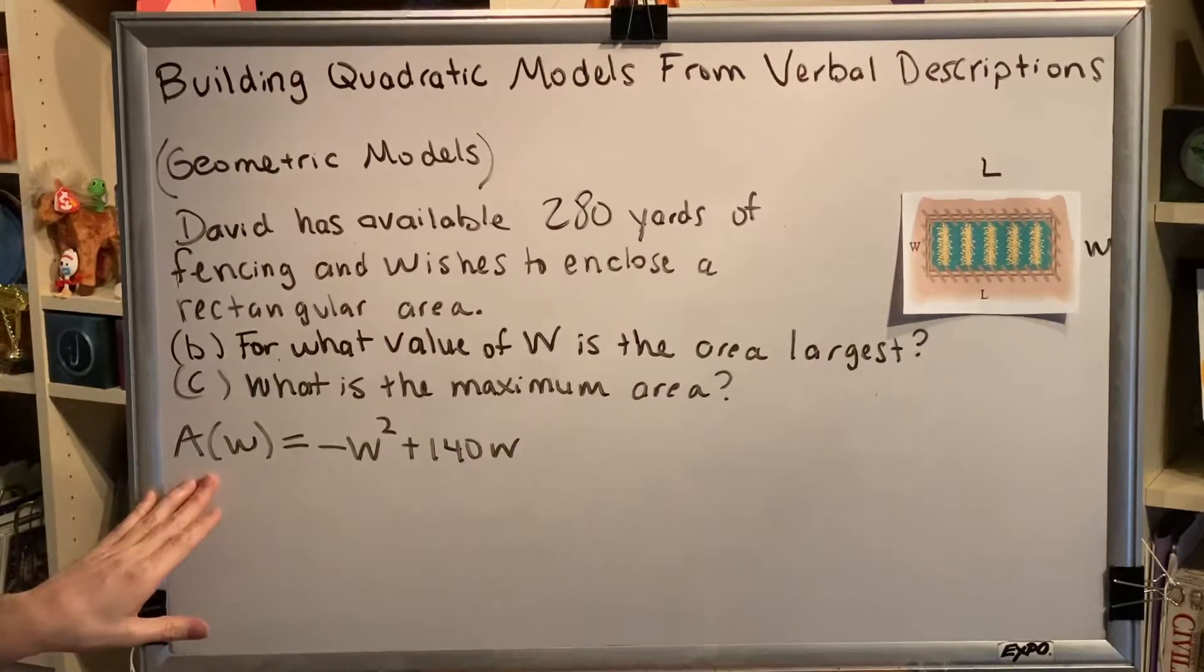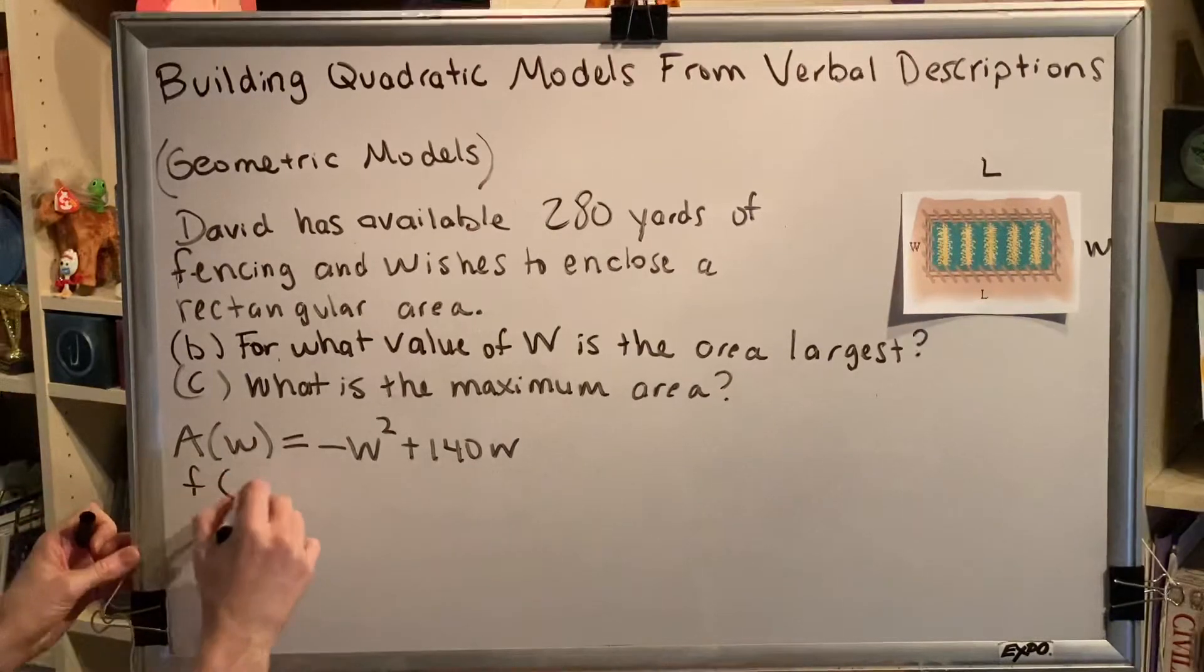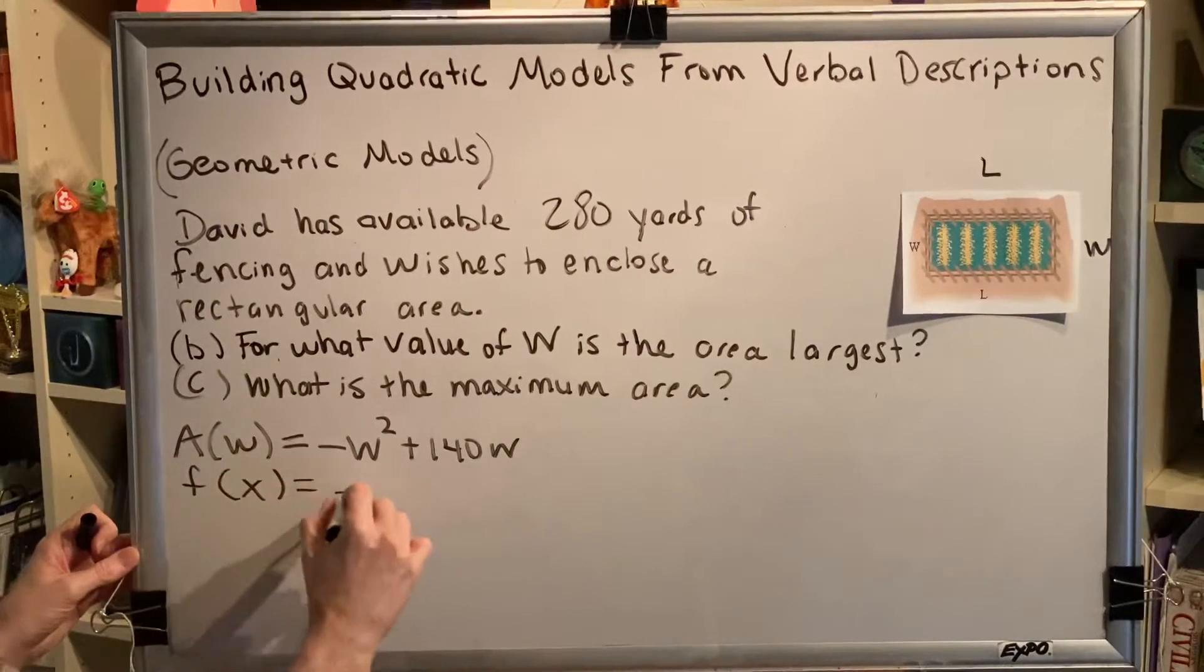In part A we found that A(W) equals negative W squared plus 140W. As we move on to parts B and C, we might find it helpful to rewrite this in function notation using X as our variable.